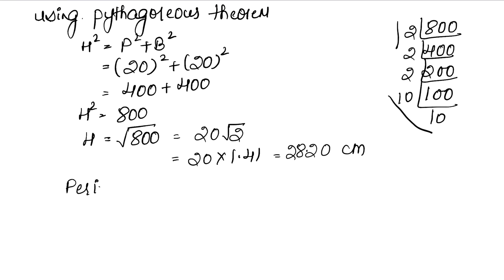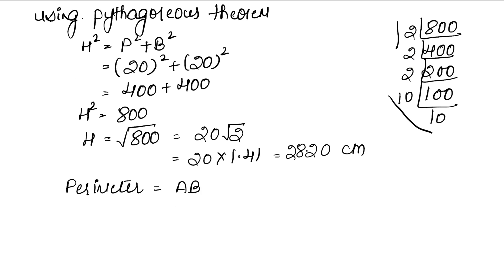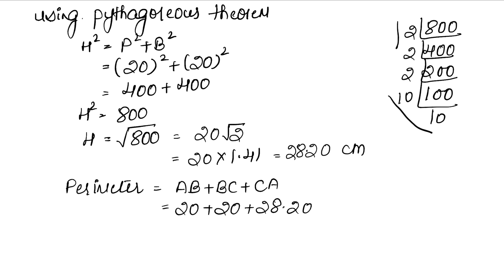Now we need to find the perimeter. The perimeter formula is: AB + BC + CA. AB and BC are the perpendicular and base, both 20 cm, and CA (hypotenuse) is 28.20 cm. So perimeter = 20 + 20 + 28.20 = 68.20 cm is the answer.